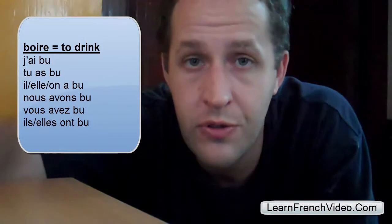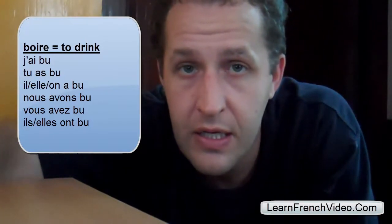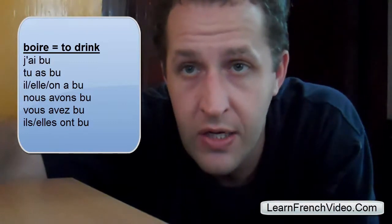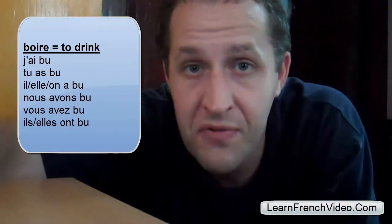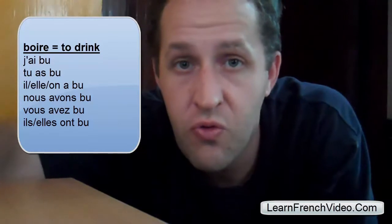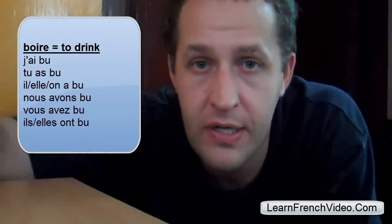I'm going to illustrate this with the verb boire, which means 'to drink.' J'ai bu — I drank. Tu as bu — you drank. Il a bu — he drank. Nous avons bu — we drank. Vous avez bu — you drank. Ils ont bu — they drank. You can see that all you need to do is stick 'bu' onto the subject and avoir conjugated in the present. For example, j'ai bu — I drank.